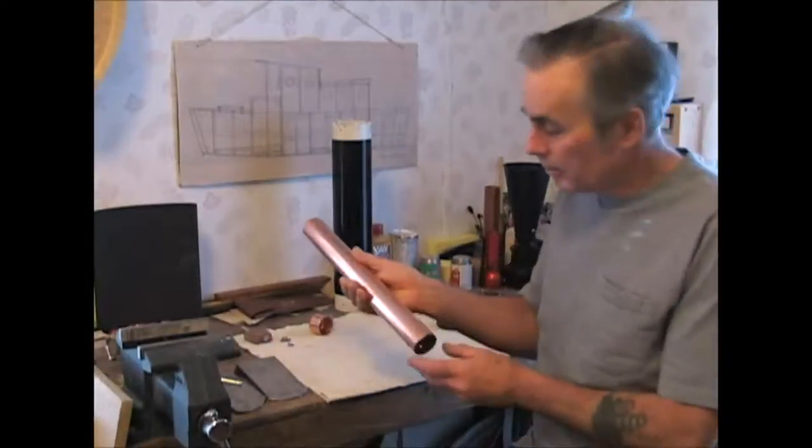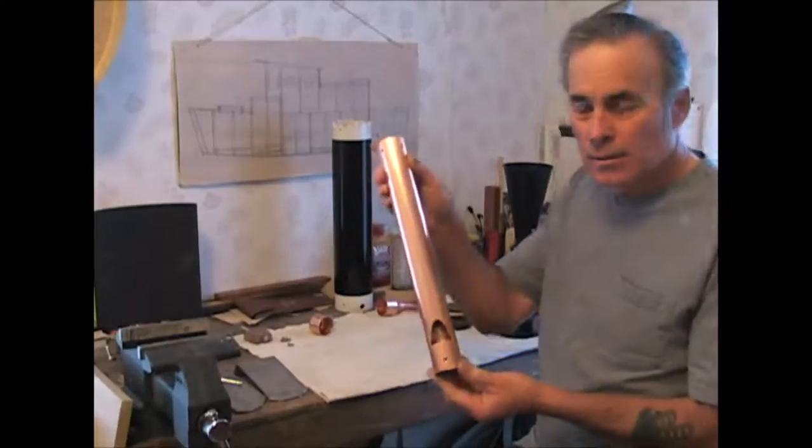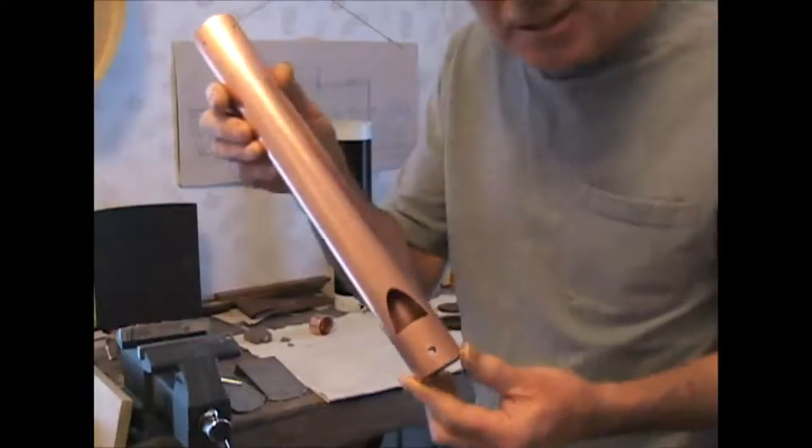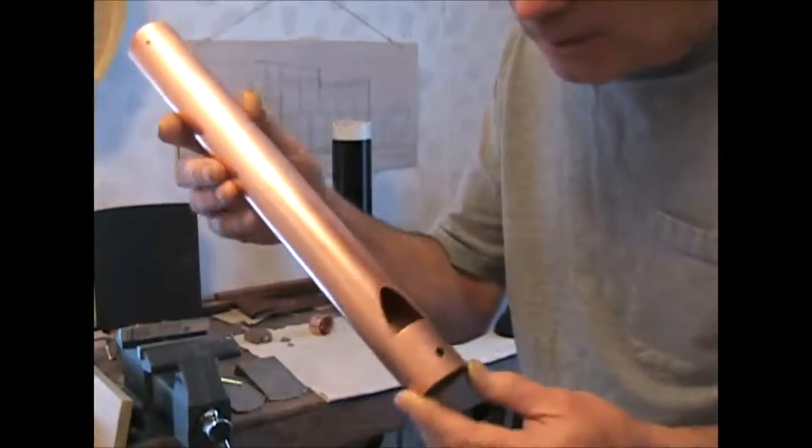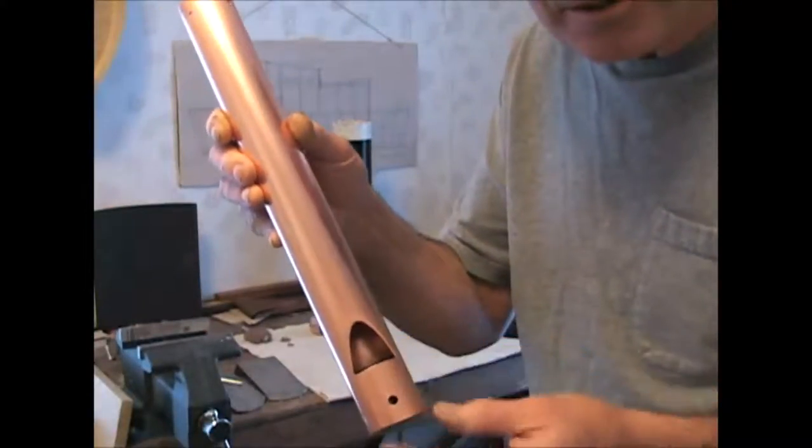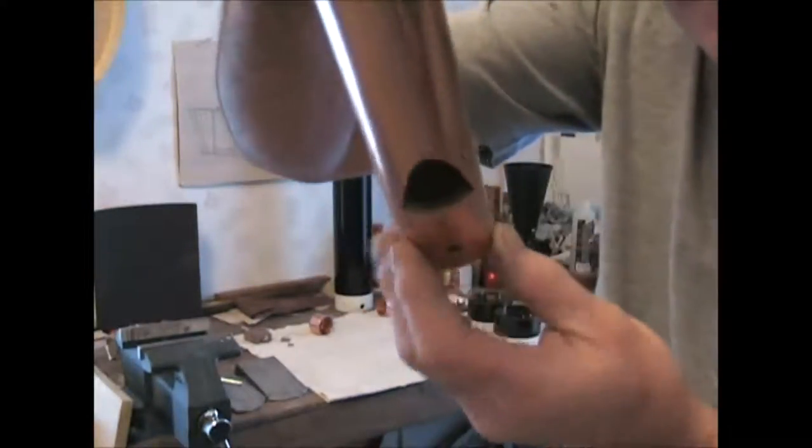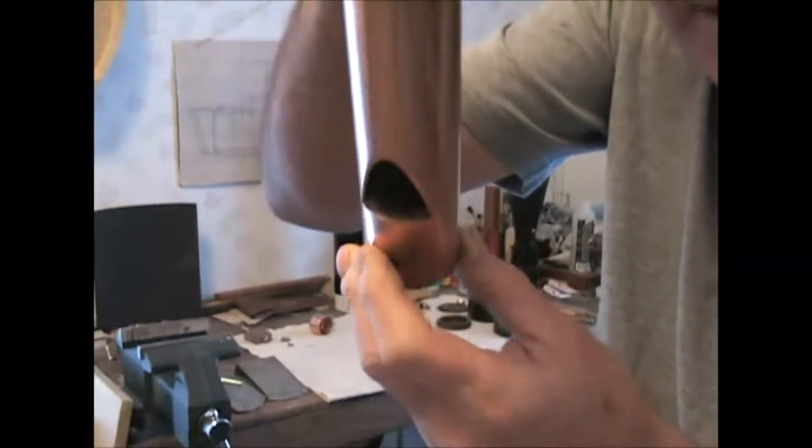I've made my copper whistle now. This is the body. It's inch and a half copper pipe. Got the mouth cut in it there. And I've got my brass plate in there.